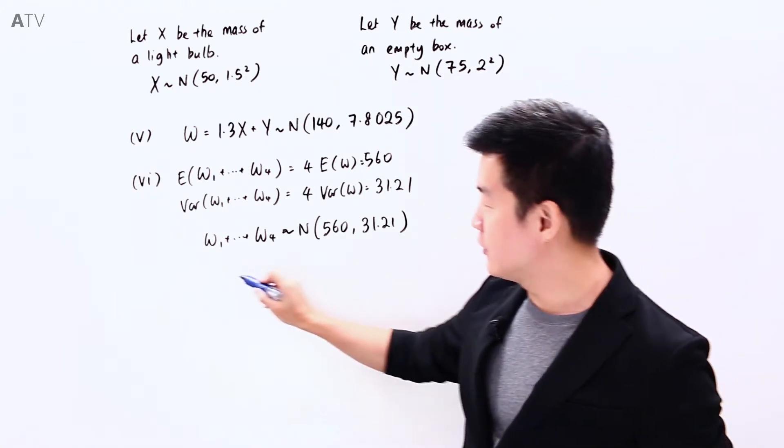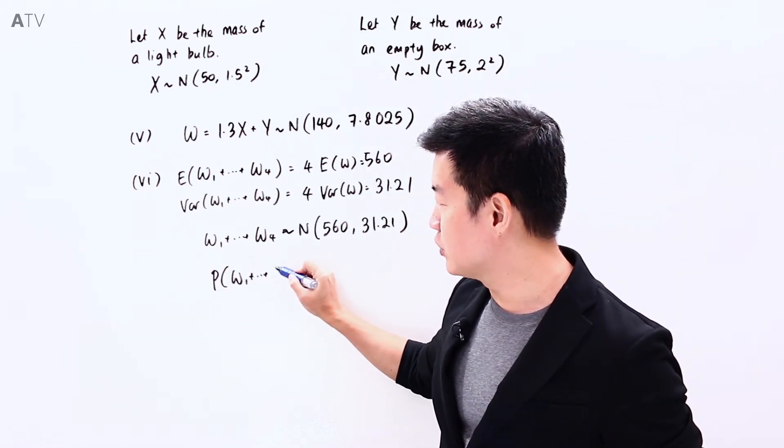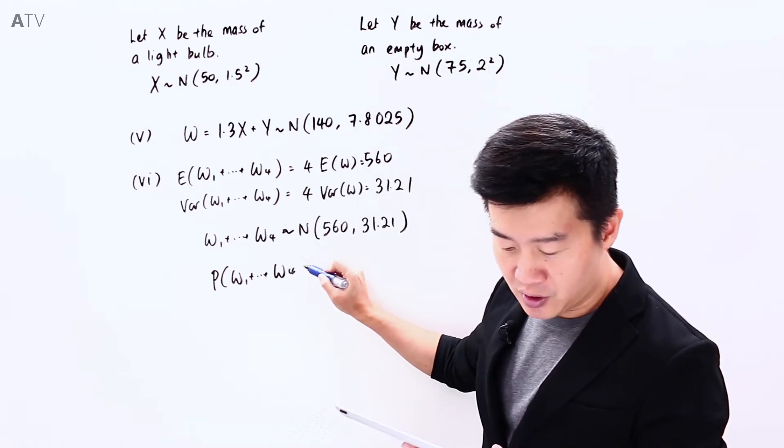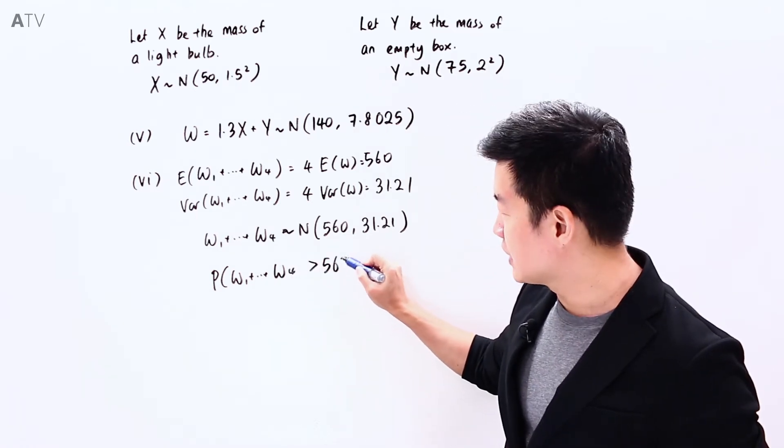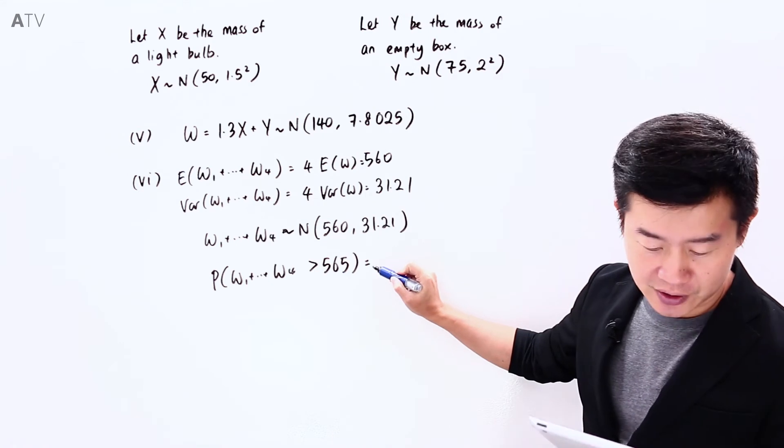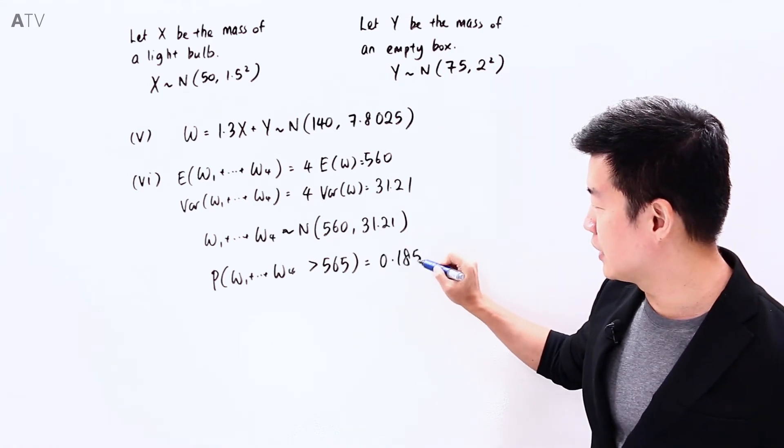What the question is asking for is the probability when W1 plus W2 all the way until W4 is bigger than 565. Pressing this into the calculator, we will get 0.185.